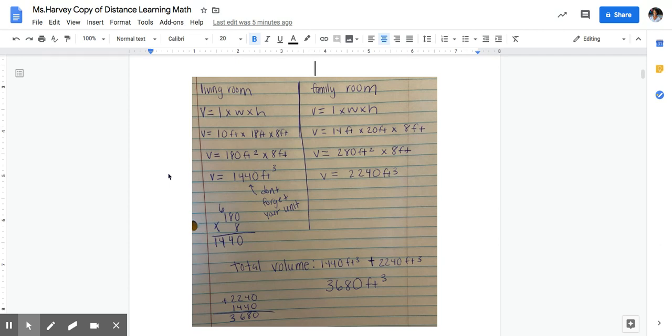Then I multiply them and I got my volume of the living room to be 1440 feet cubed. Then for the family room I plugged in the dimensions that were given to me in the word problem: 14 feet by 20 feet by 8 feet. I multiplied them in order to get a volume of 2240 feet cubed. But I'm not done yet because I have to find the total volume of both rooms.